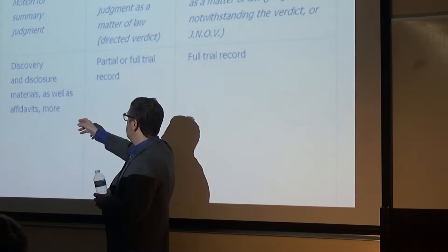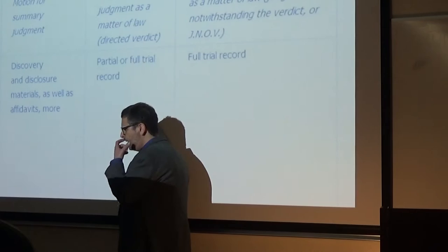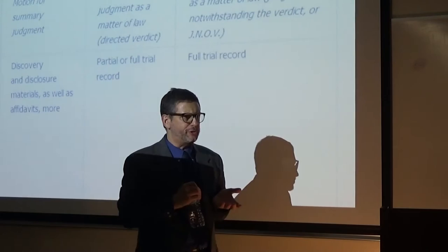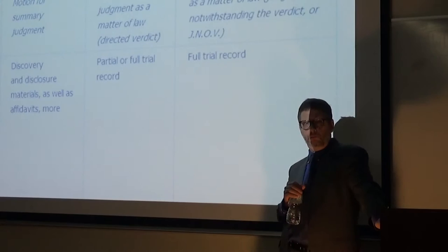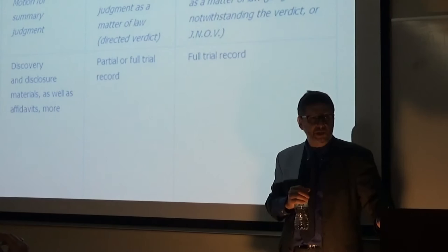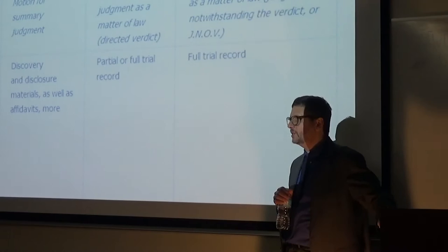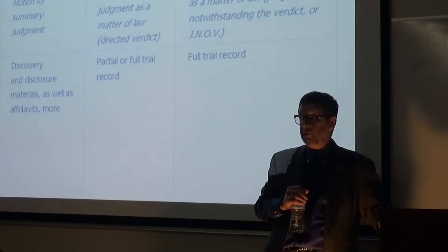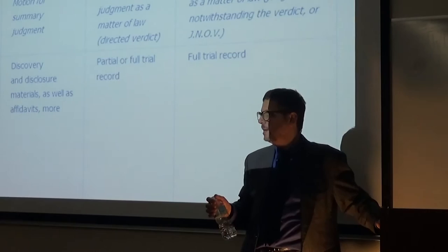The difference between Rule 56 summary judgment and a Rule 50 motion for judgment as a matter of law is primarily when the motion takes place. Rule 56 is before trial — we're not looking at trial evidence because trial hasn't happened yet. Instead we're looking at stuff that would be used at trial, like deposition testimony. An affidavit is a document where someone signs under penalty of perjury saying, 'if I testify at trial, this is what I would say.' So it's like a peek ahead at trial.